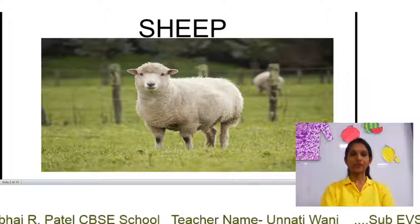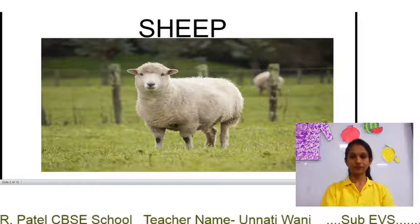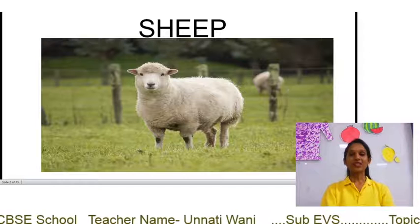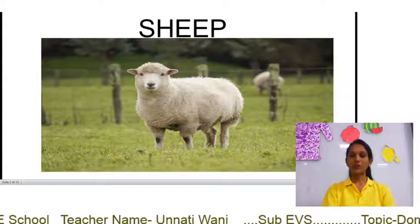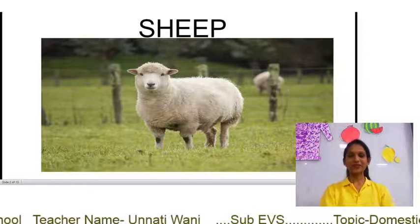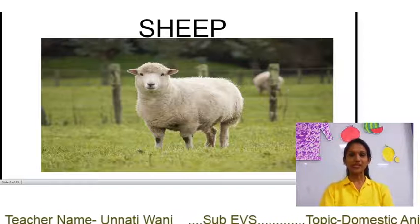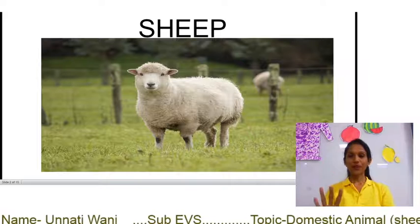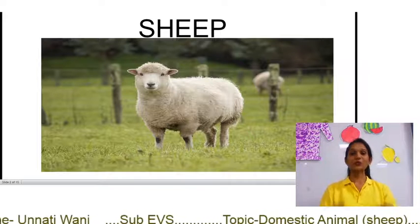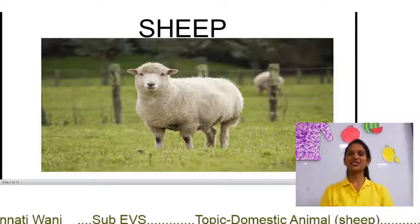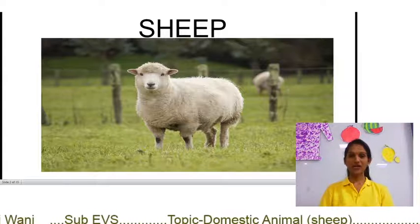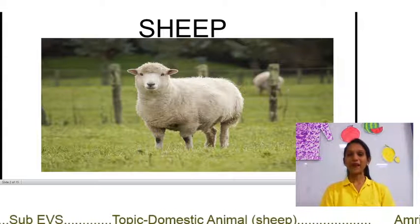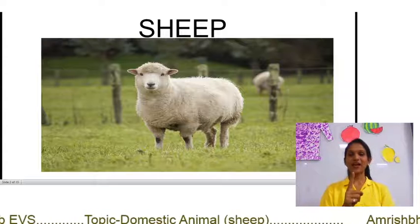See children, this is sheep — S-H-E-E-P, sheep. Sheep stays near our house, around our house, and sheep helps us. That's why we call it a domestic animal. Sheep has four legs, two ears, two eyes, and one tail.